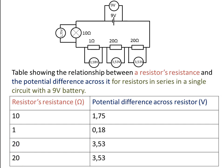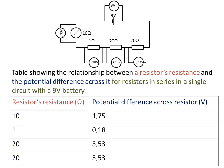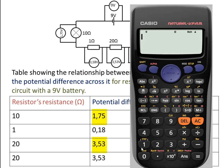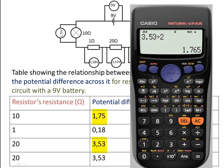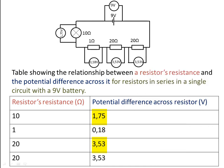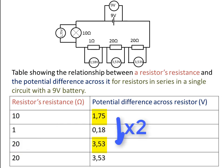When we compare the resistances: 20 ohms and 10 ohms — 10 is two times less than 20 ohms. So if we say 1.75 times 2, we get 3.5. Just as 20 is double 10, 3.5 is double 1.75.